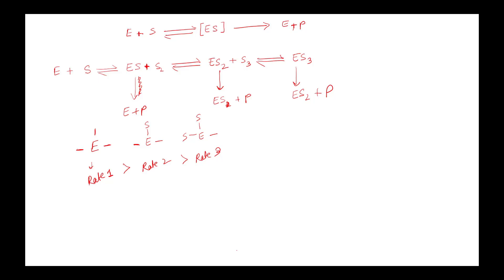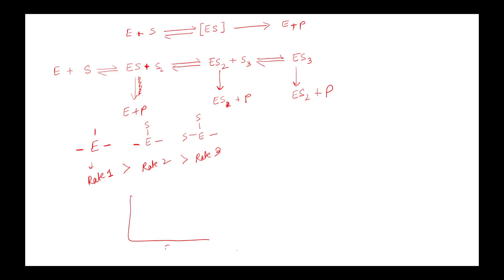This is one reason why the rate of reaction does not increase linearly with substrate concentration — different substrates can bind to different sites. On a graph of substrate concentration versus fraction occupied or rate of reaction, the normal Michaelis-Menten equation gives a hyperbolic curve.